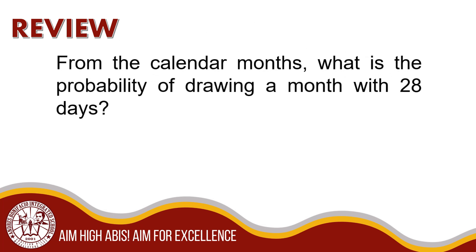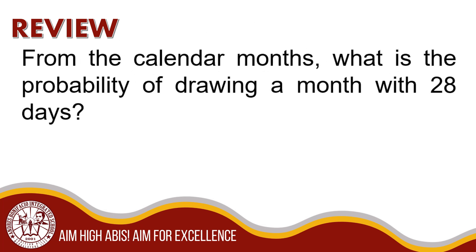From the calendar months, what is the probability of drawing a month with 28 days? There are 12 months, of which 4 have 30 days, 1 has either 28 or 29 days, and the remaining 7 have 31 days. If a month is chosen randomly from a list of 12, all of the months contain 28 days, so you have 12 out of 12, or 1.